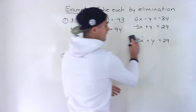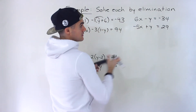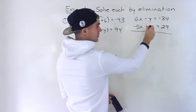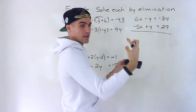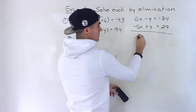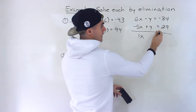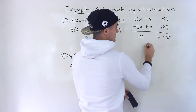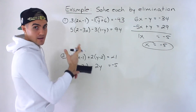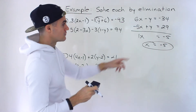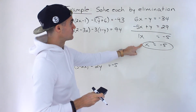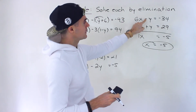But in this case, we don't have to multiply anything. These are already opposites of each other, so we just have to add both of these — because negative y plus positive y would end up equaling zero. Those are going to cancel out. And then 6x plus negative 5x would just give us 1x. And then negative 34 plus 29 would give us negative 5. So x is equal to negative 5.